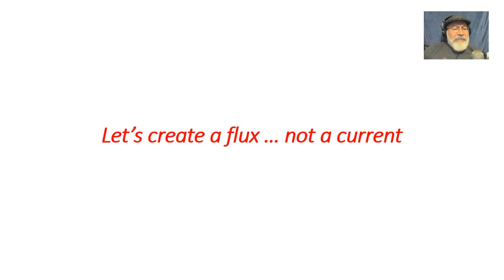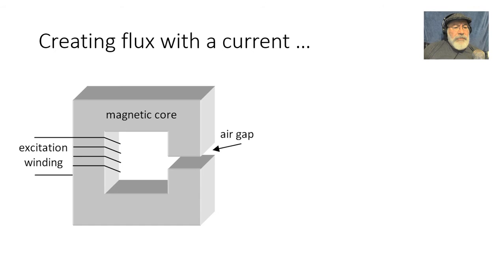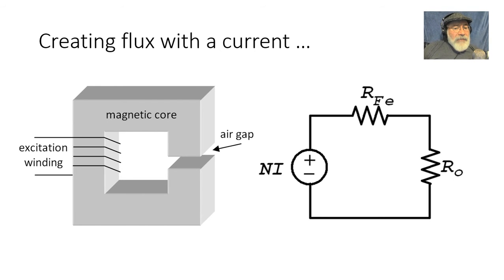Now let's create a flux instead of a current. Creating a flux with a current is something that we've learned how to do. We apply a current to a coil in the magnetic circuit, and that current in that coil will apply an MMF that will be responsible for establishing a flux in the circuit. The magnetic core will take the flux over to the air gap on the right, which is where we need it.